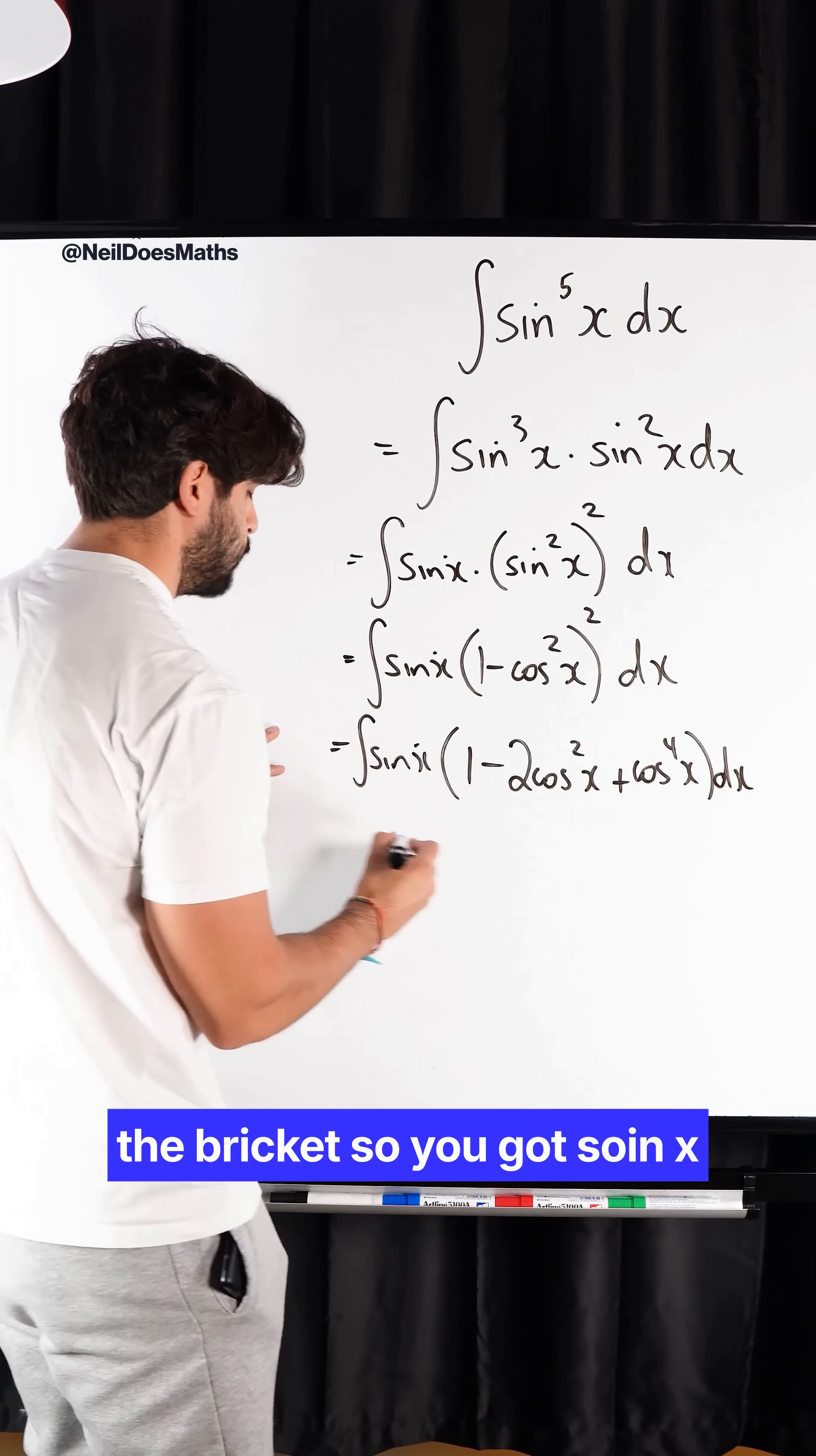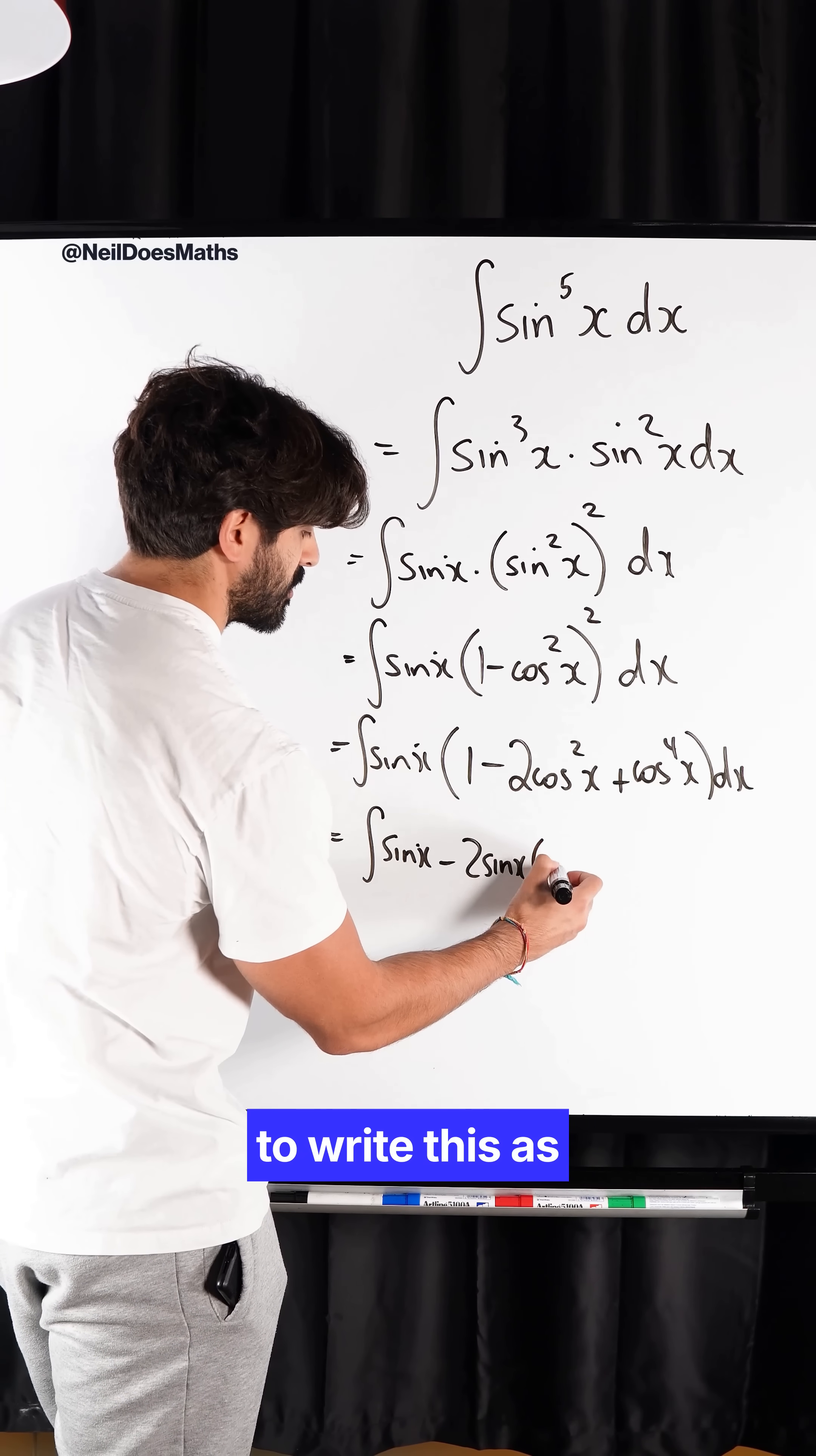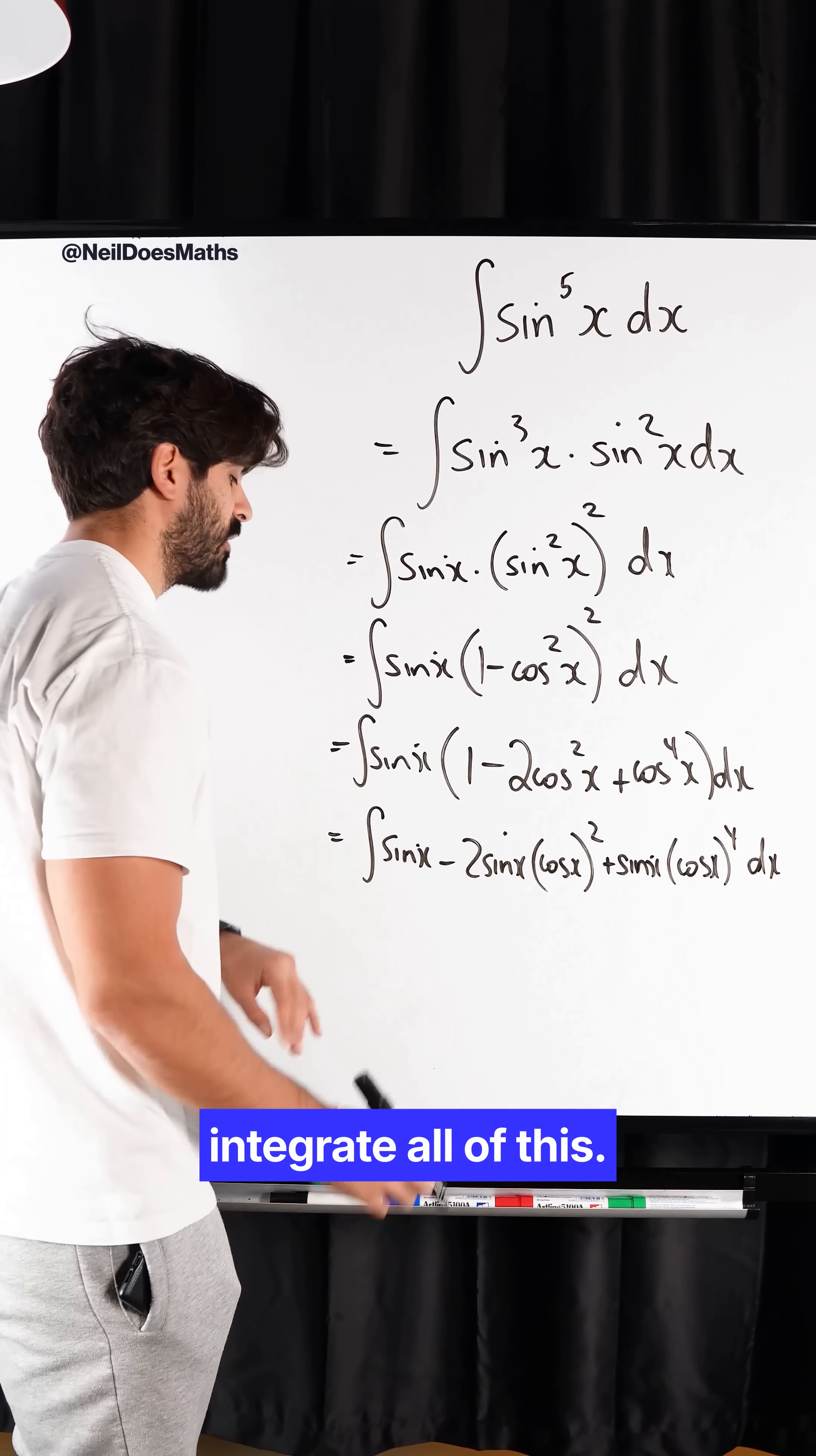Now we need to expand the bracket. So you've got sin x minus 2 sin x. Now, for the purpose of integrating, I'm going to write this as cos x all squared. Then multiplying that in, we get plus sin x cos x to the power 4 dx. And now we can integrate all of this.